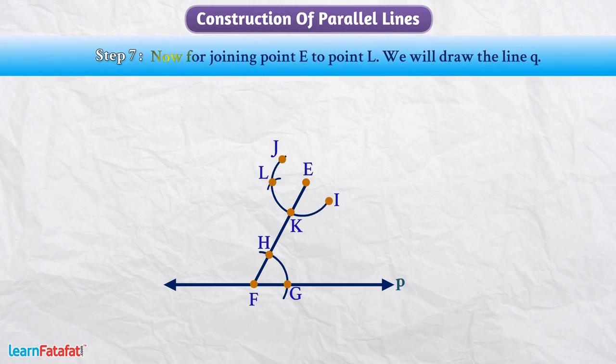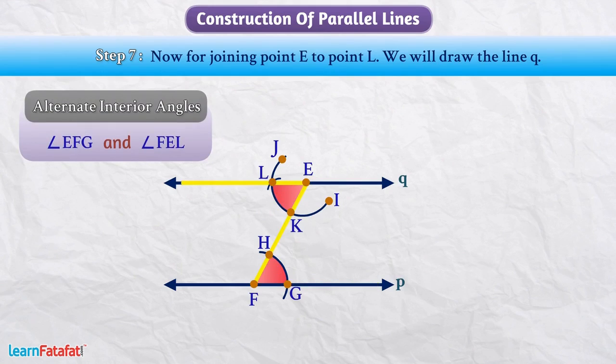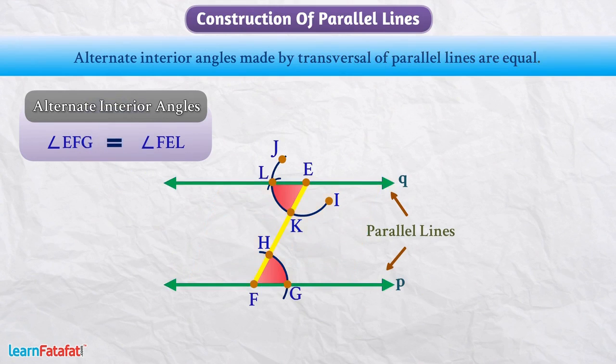Now, for joining point E and point L, we will draw line Q. Here, we can see that angle EFG and angle FEL are alternate interior angles. For constructing it, we have not changed the radius of the compass. That's why these are equal. We know that alternate interior angles made by transversal of parallel lines are equal. So, we can say that line P is parallel to line Q.